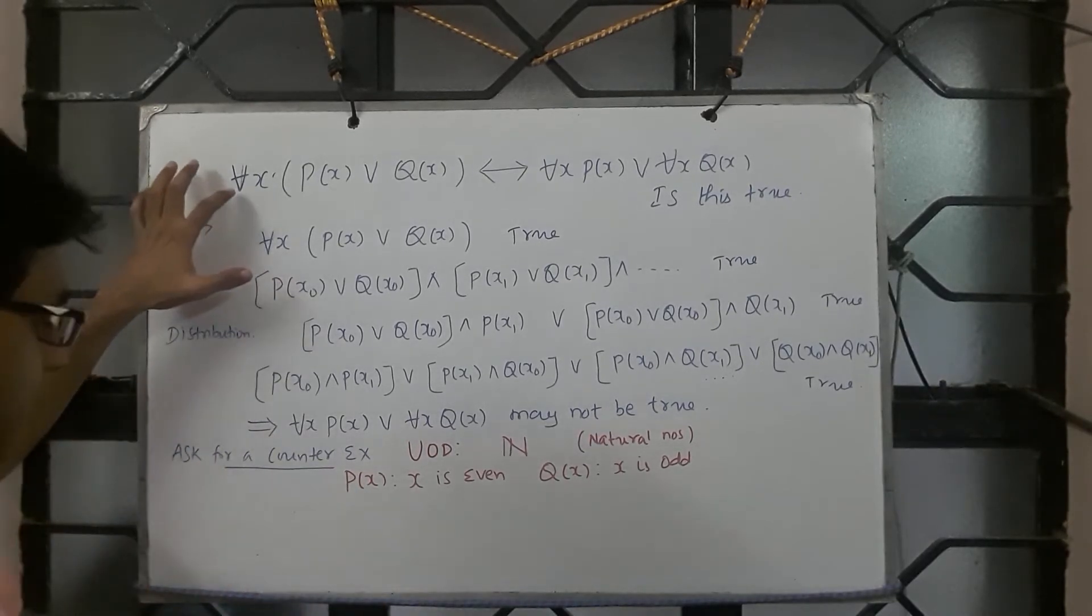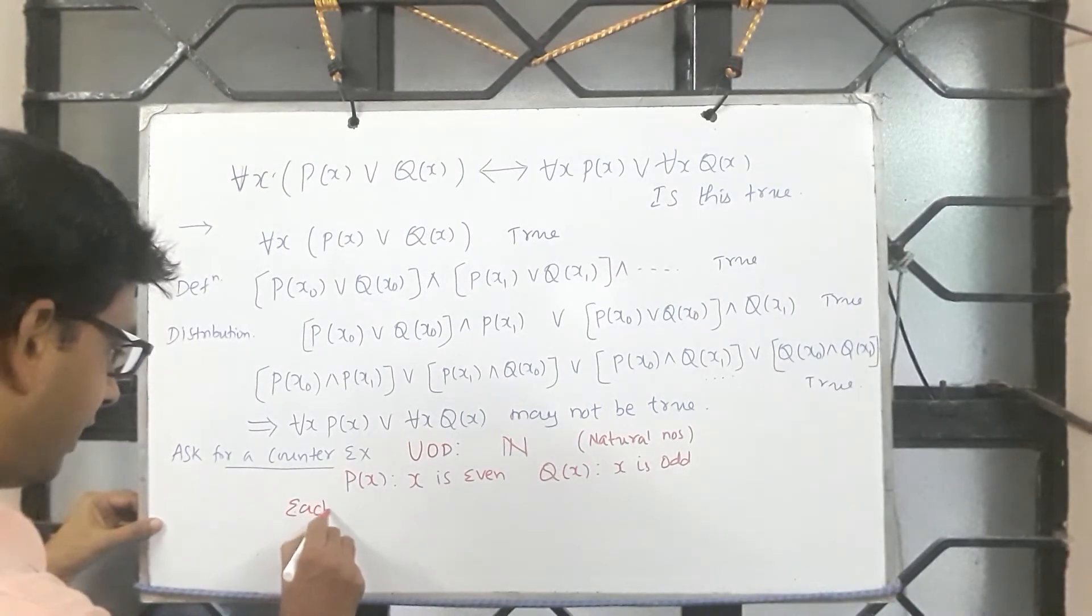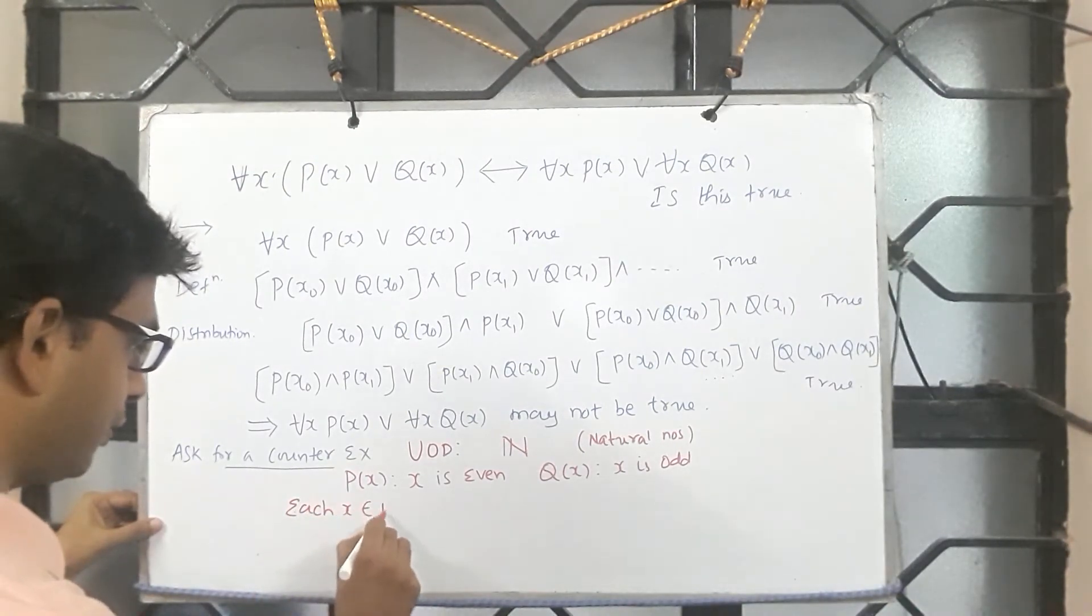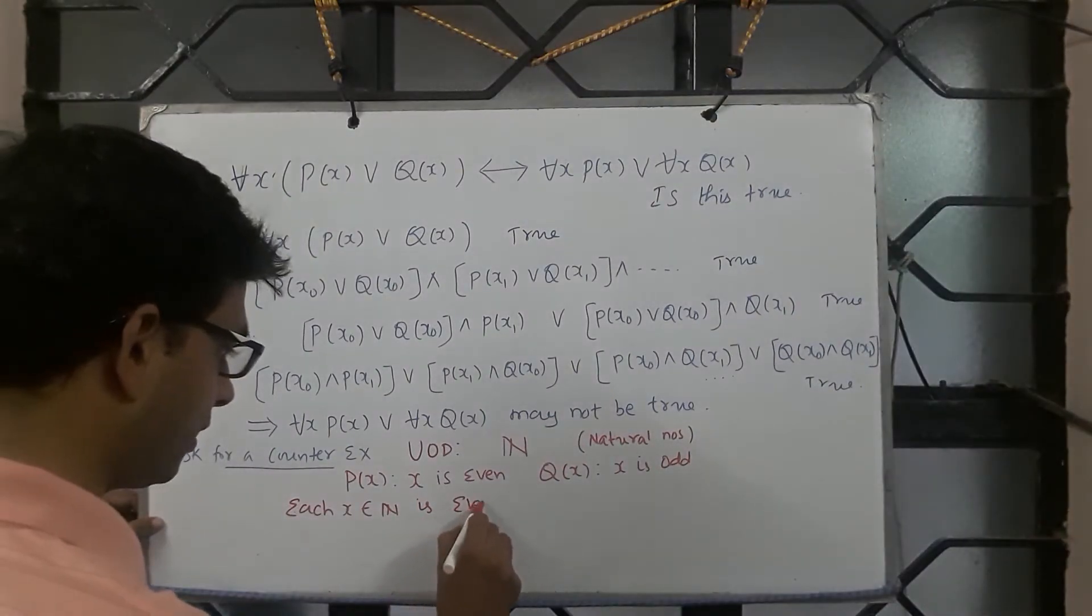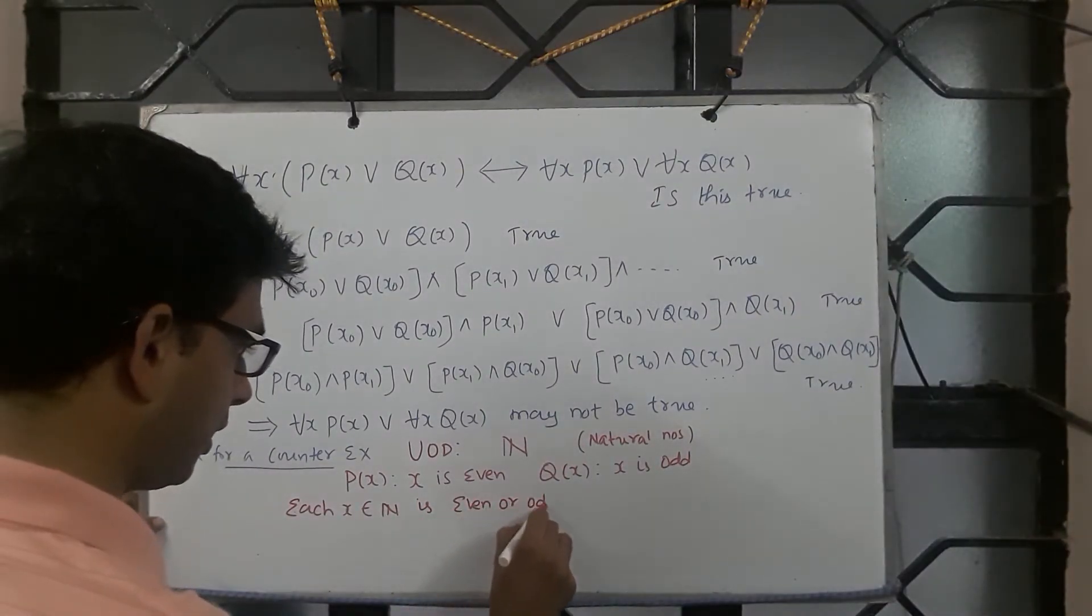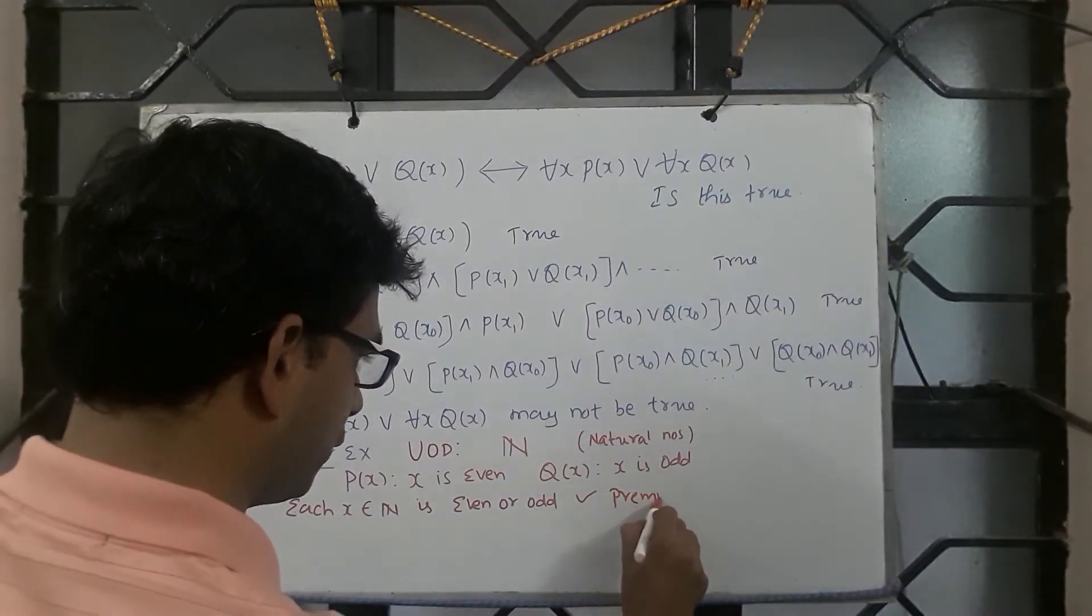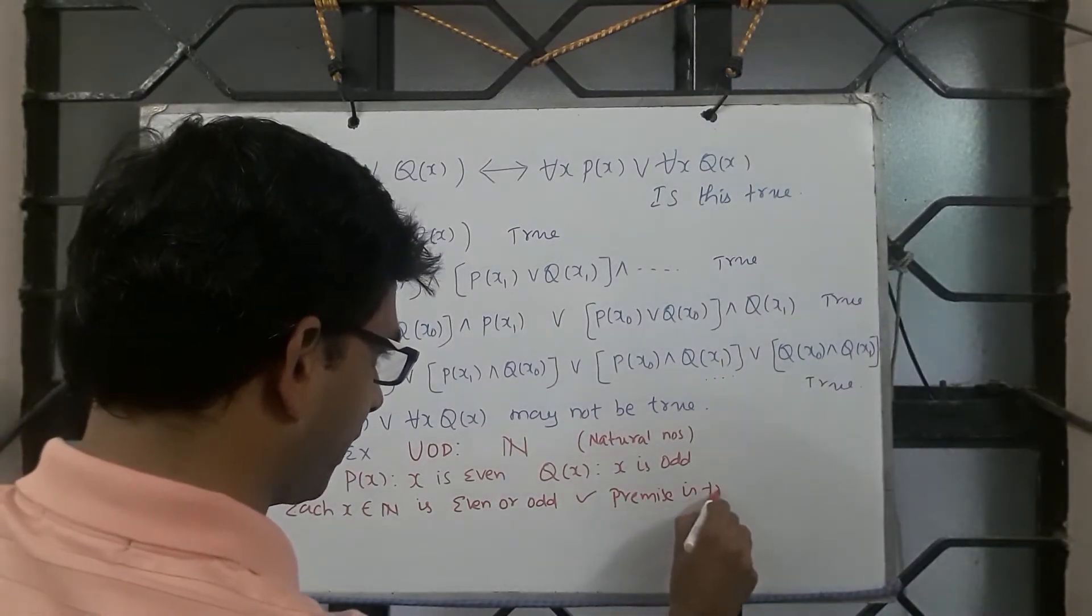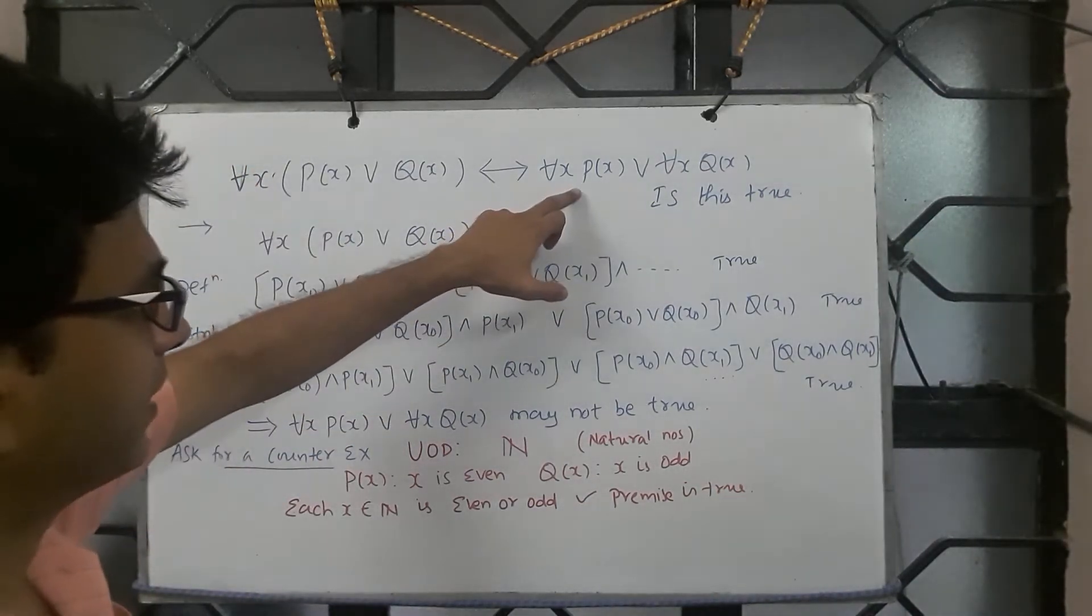Now, with respect to this, the premise says each x belongs to N is even or odd, which is true. So premise is true. This part is true.